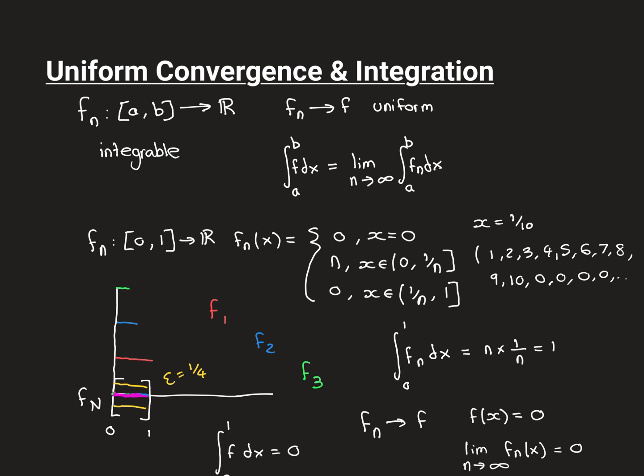So what I've illustrated is how this theorem can break in two different ways if you don't have uniform convergence and only have pointwise convergence. We'll have a break here, and in the next video we'll move on to actually proving that if you do have uniform convergence, it does hold true.